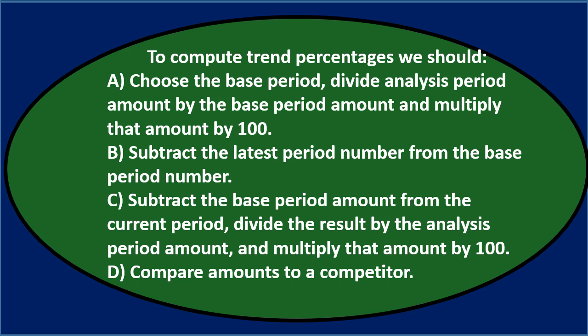To compute trend percentages — that seems like a horizontal type of analysis, we're doing a trend over time. Option A: choose the base period — that sounds familiar. Divide analysis period amount by the base period amount — that sounds kind of familiar — and then multiply that amount by 100 percent.